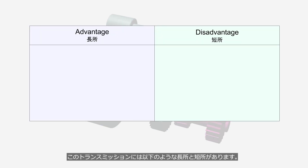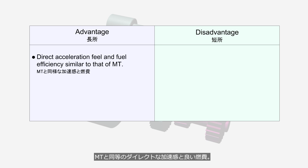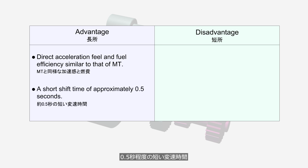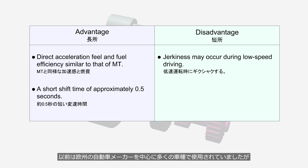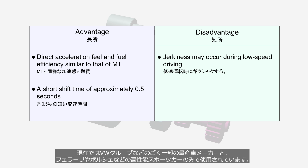This transmission has the following advantages and disadvantages. It offers a direct acceleration feel and good fuel efficiency similar to a manual transmission, and a short shift time of approximately half a second. However, jerkiness may occur during low-speed driving. DCTs were once widely used in many models, primarily by European automakers, but today they are only found in a few mass-production manufacturers like the Volkswagen Group, as well as high-performance sports cars such as Ferrari and Porsche.